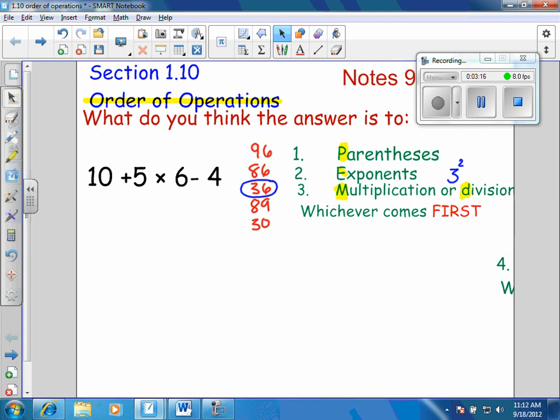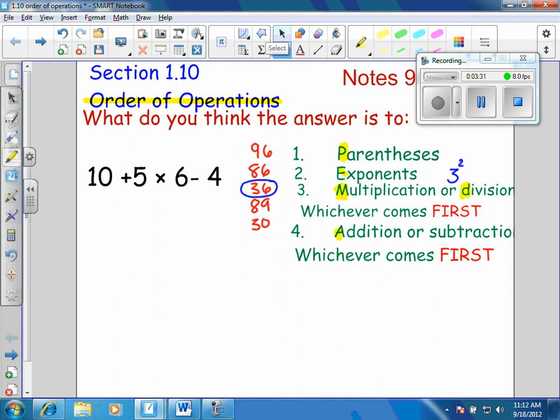And then the last thing is going to be what, Augie? So, P-E-M-D. Addition and subtraction. Addition and subtraction. So, step 4, the A stands for addition. And the S stands for subtraction. But remember, you always do whichever one comes first.